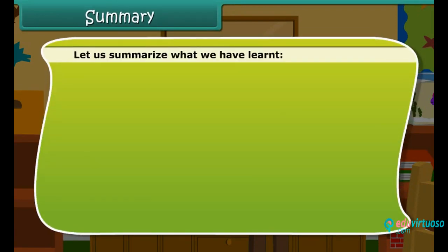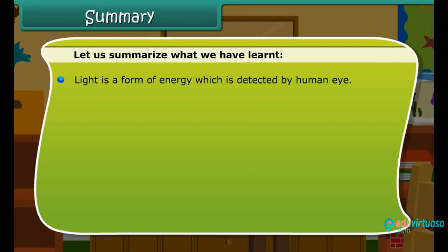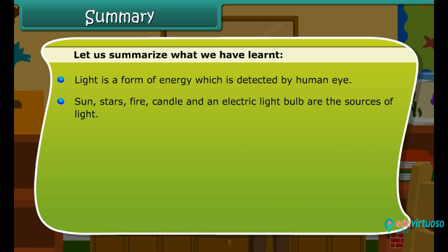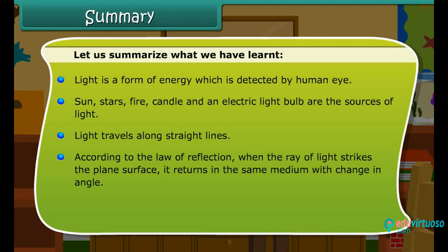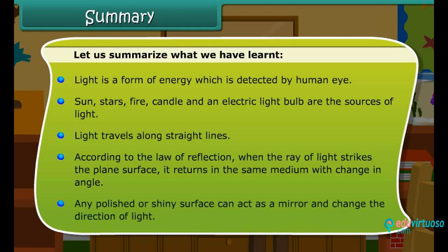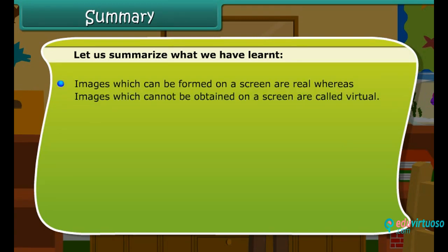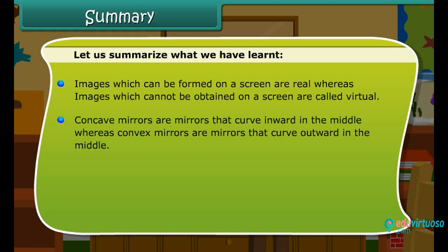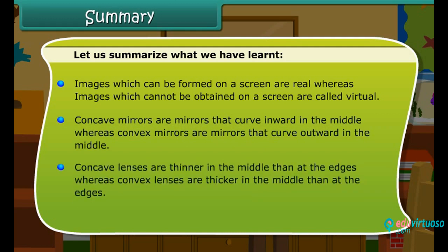Let us summarize what we have learned. Light is a form of energy which is detected by the human eye. The sun, stars, fire, candle, and an electric light bulb are the sources of light. Light travels along straight lines. According to the law of reflection, when the ray of light strikes the plane surface, it returns in the same medium with a change in angle. Any polished or shiny surface can act as a mirror and can change the direction of light. Images which can be formed on a screen are real, whereas images which cannot be obtained on a screen are called virtual. Concave mirrors curve inward in the middle, whereas convex mirrors curve outward in the middle. Concave lenses are thinner in the middle than at the edges, whereas convex lenses are thicker in the middle than at the edges.